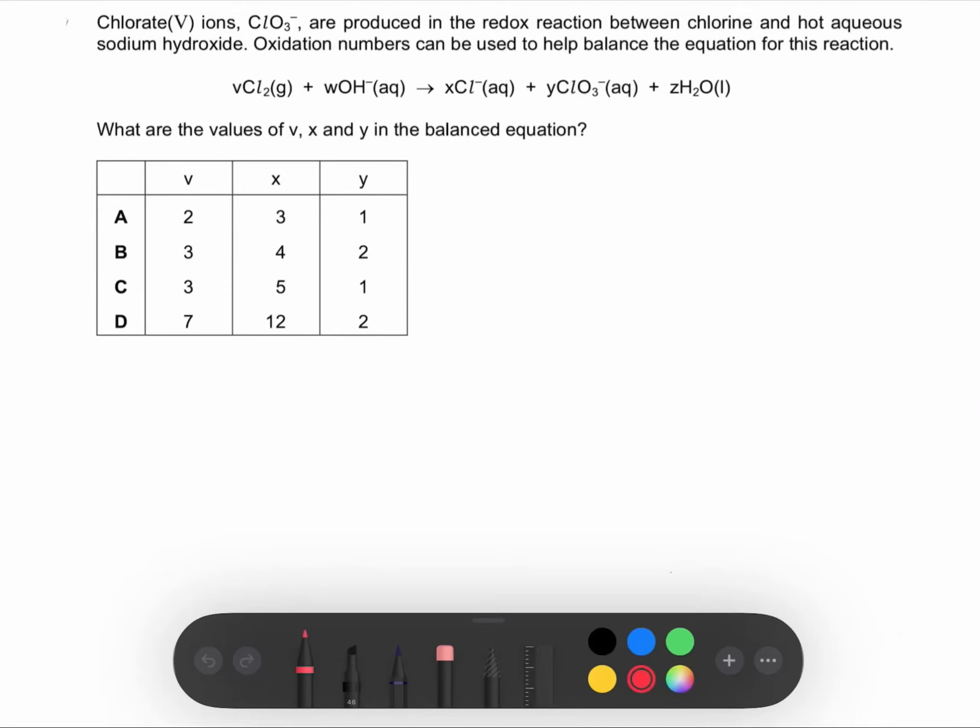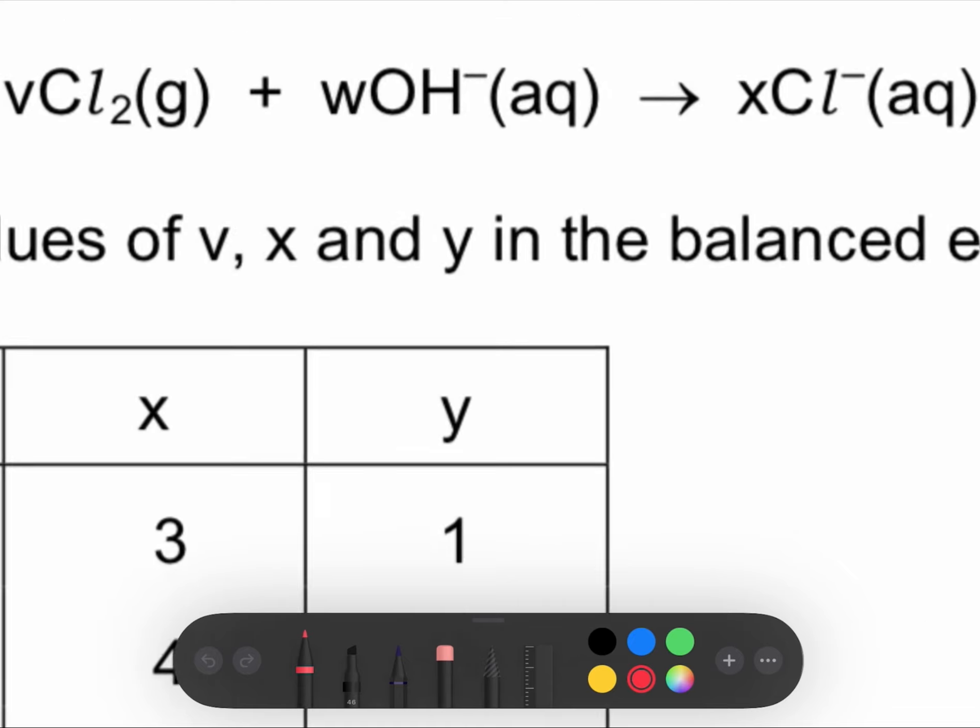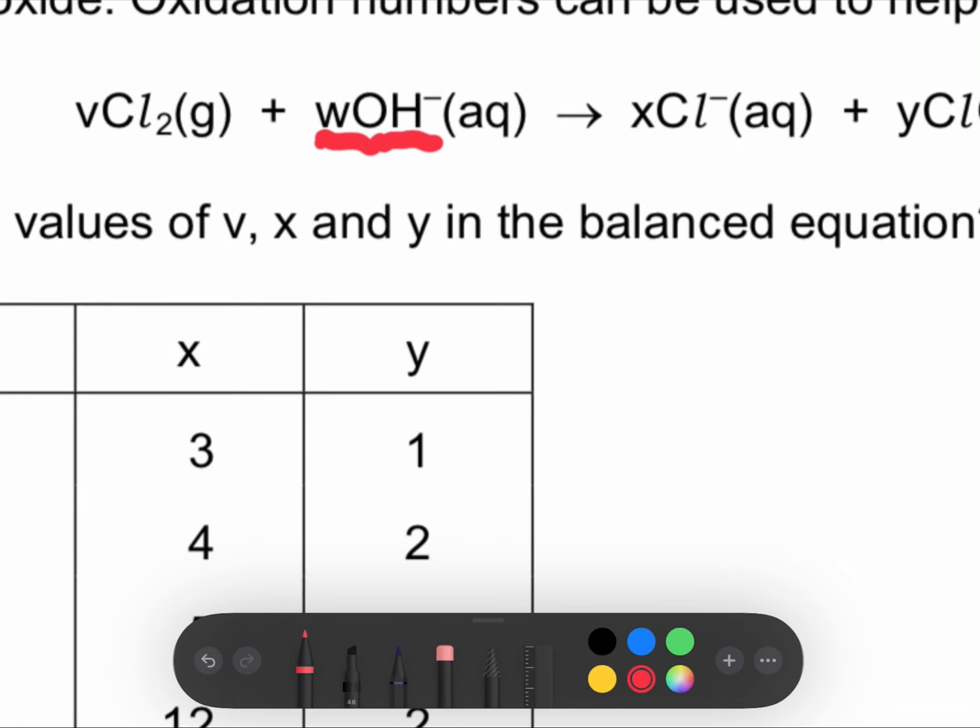Salam and welcome everybody. As we used to do, pause the video and read the question carefully. The question is asking me to make a balancing for this redox equation. We can notice the presence of OH⁻, which is an indication of making this equation in basic medium.